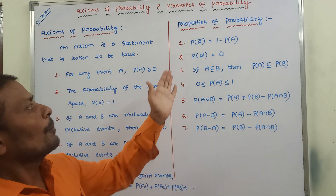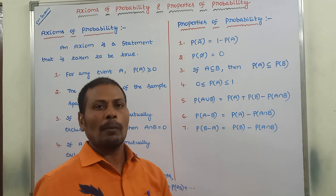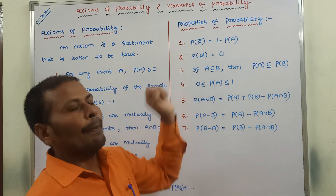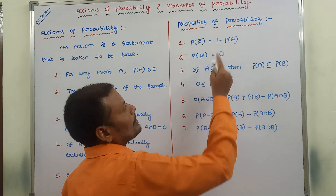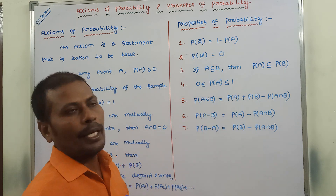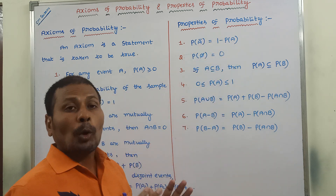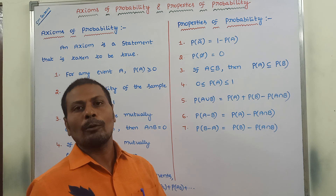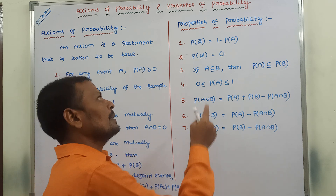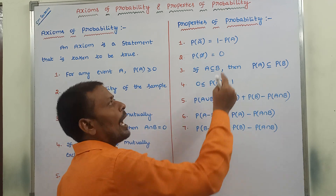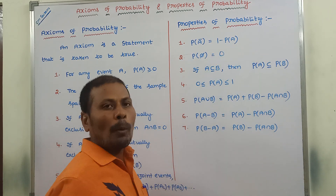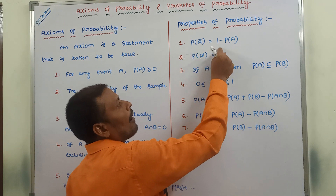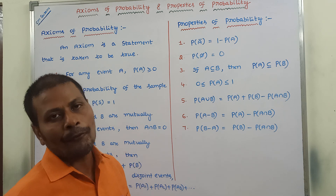Now we can go for properties of probability. First one: probability of A bar is equal to 1 minus probability of A. Here, 1 is nothing but the probability of the sample space, that is P of S is equal to 1. From that total sample space, we subtract the probability of A. Hence, P of A bar is equal to 1 minus P of A.